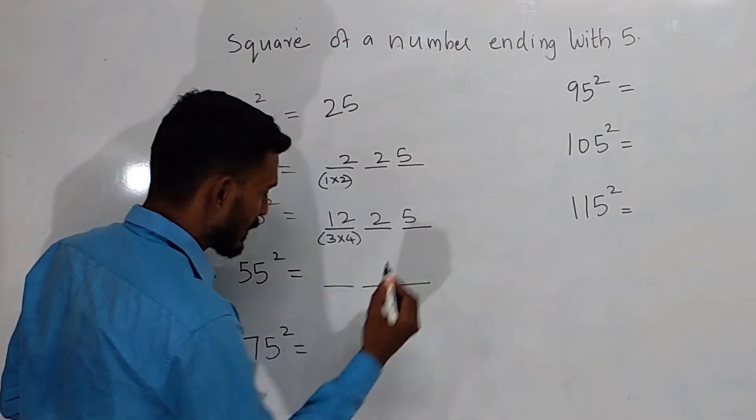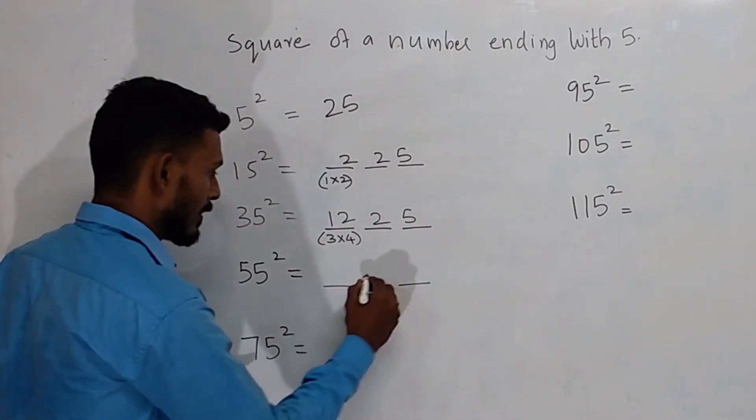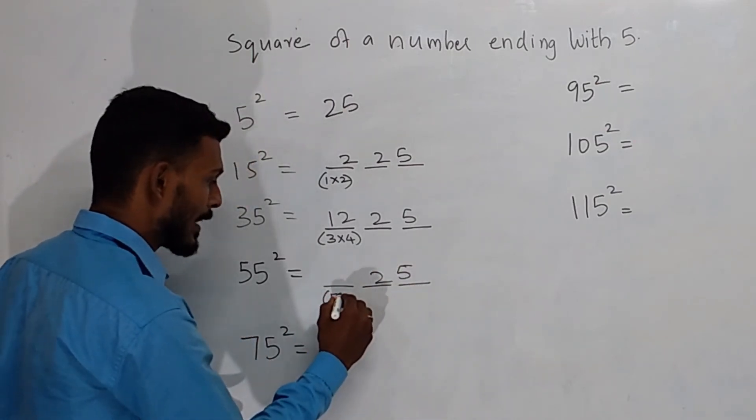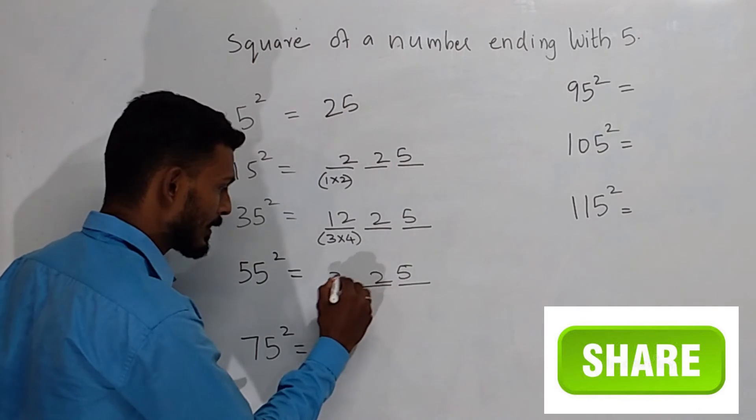Then make 3 dashes here, the same thing, 25, then 5 multiplied by the next number, that is 5 into 6, we get 30.